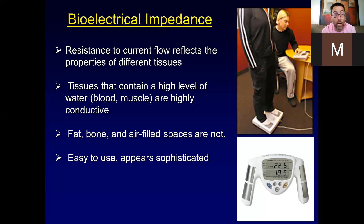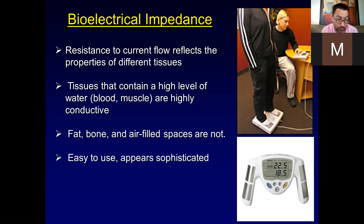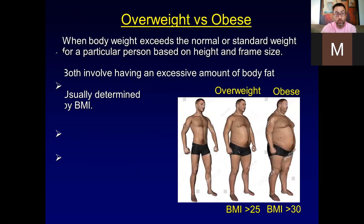Bioelectrical impedance is not particularly accurate. If you have a lot of muscle and not much fat, it tends to underestimate and make you leaner than you actually are. If you are morbidly obese, it tends to overestimate. It does reasonably well in the middle for average people, getting within about four or five percent accuracy, but at either extreme it tends to under- or over-estimate.